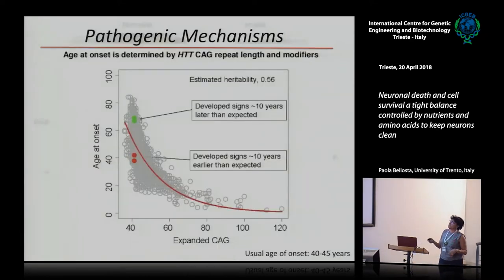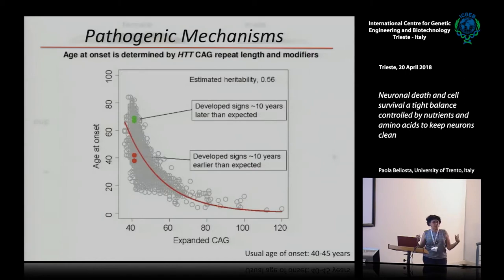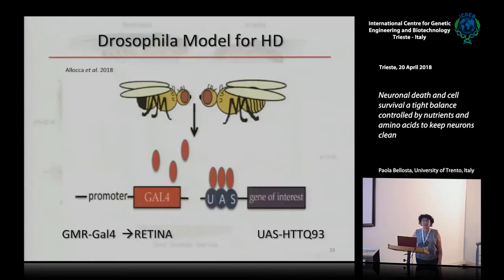Another feature of the disease is that the longer the CAG repeat, the earlier the onset. For example, if you have a sample with 90 CAG repeats, you already know it will be like in children — the longer the CAG, the earlier the disease, probably due to faster formation of aggregates.